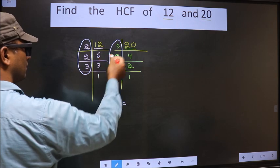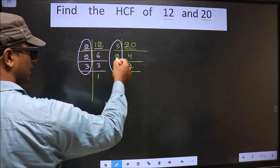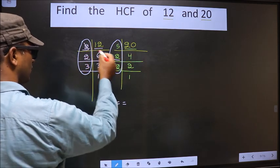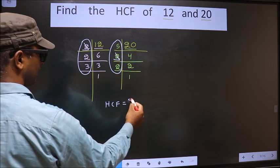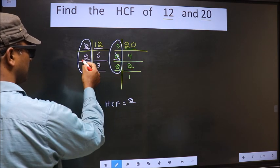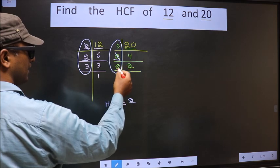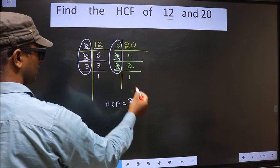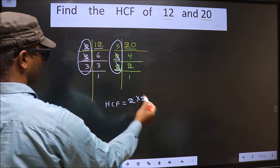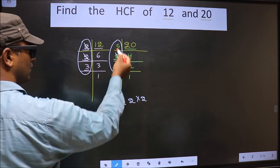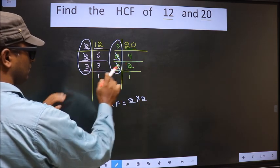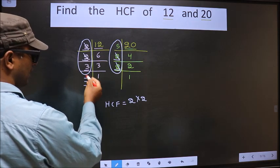Starting with the number 2. Do we have 2 here? Yes. So you cut 2 right here. Next number is 2. Do we have 2 here? Yes. So you cut 2 right here. Next number is 3. Do we have 3 here? No. No more numbers are left.